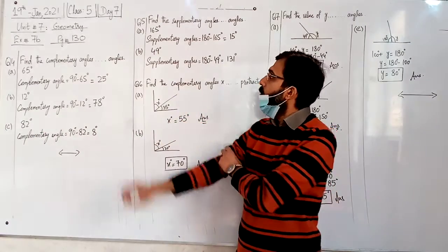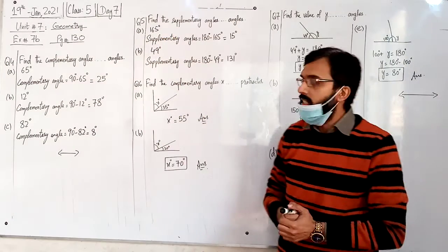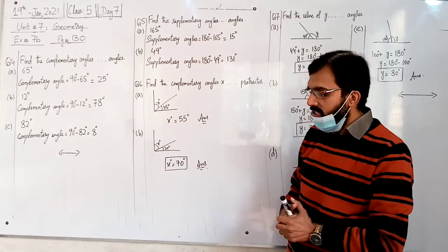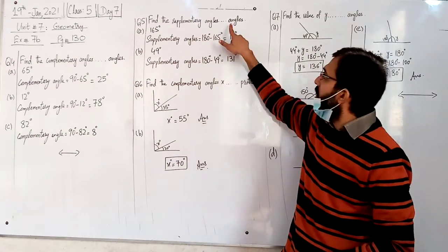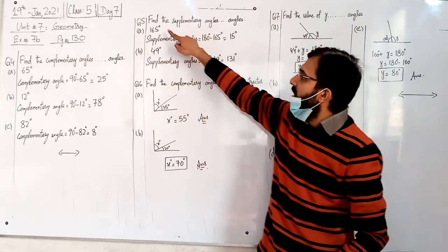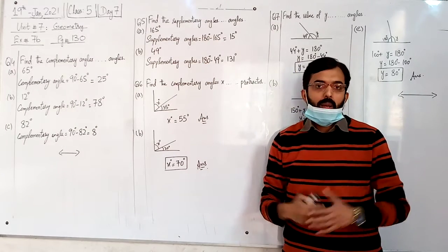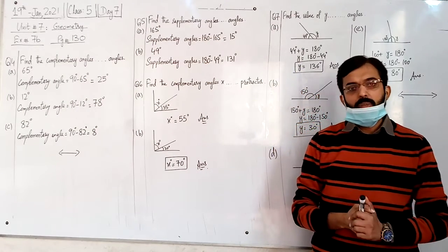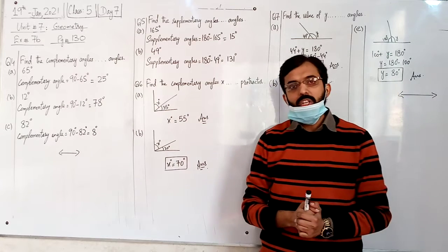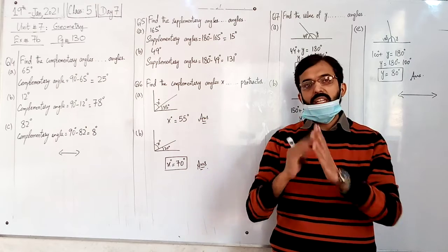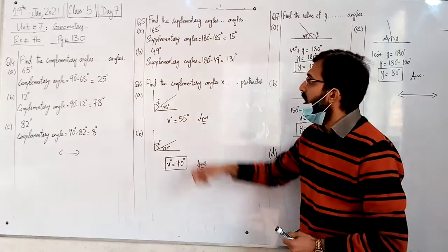Question 5: find the supplementary angles from the angles given below. The definition from the previous lecture: two angles are supplementary if their sum is 180 degrees.